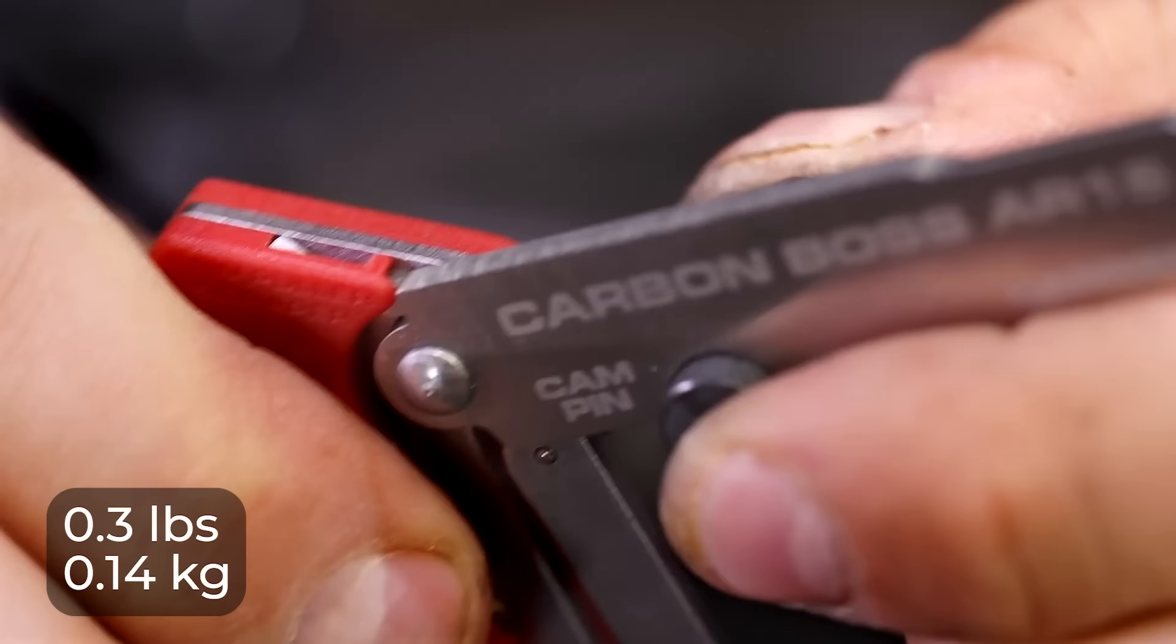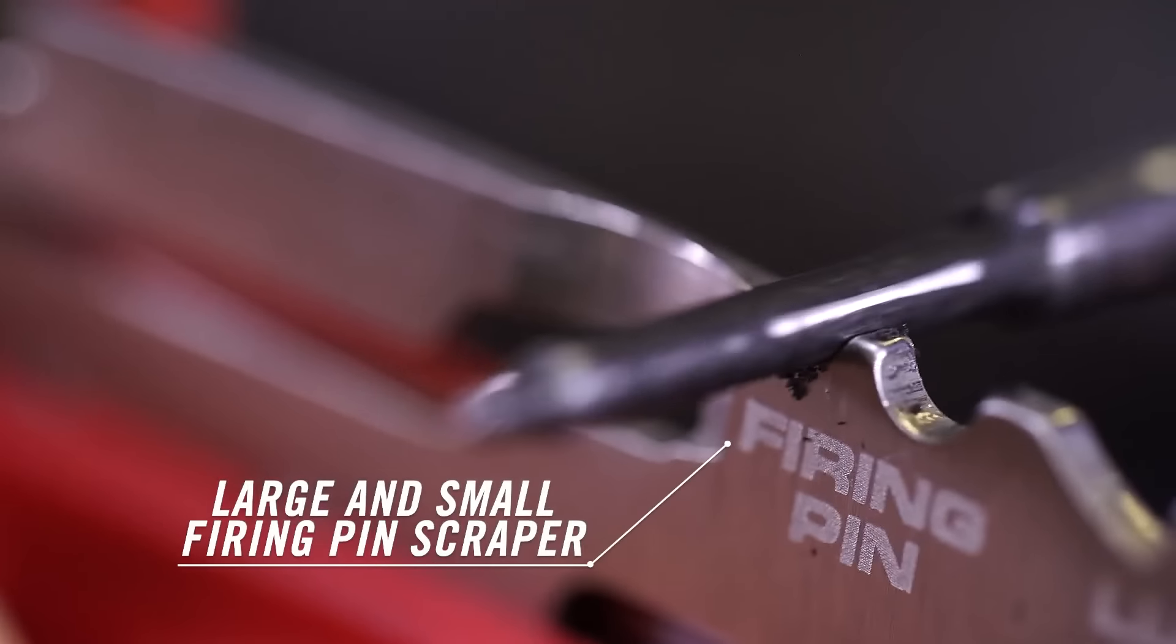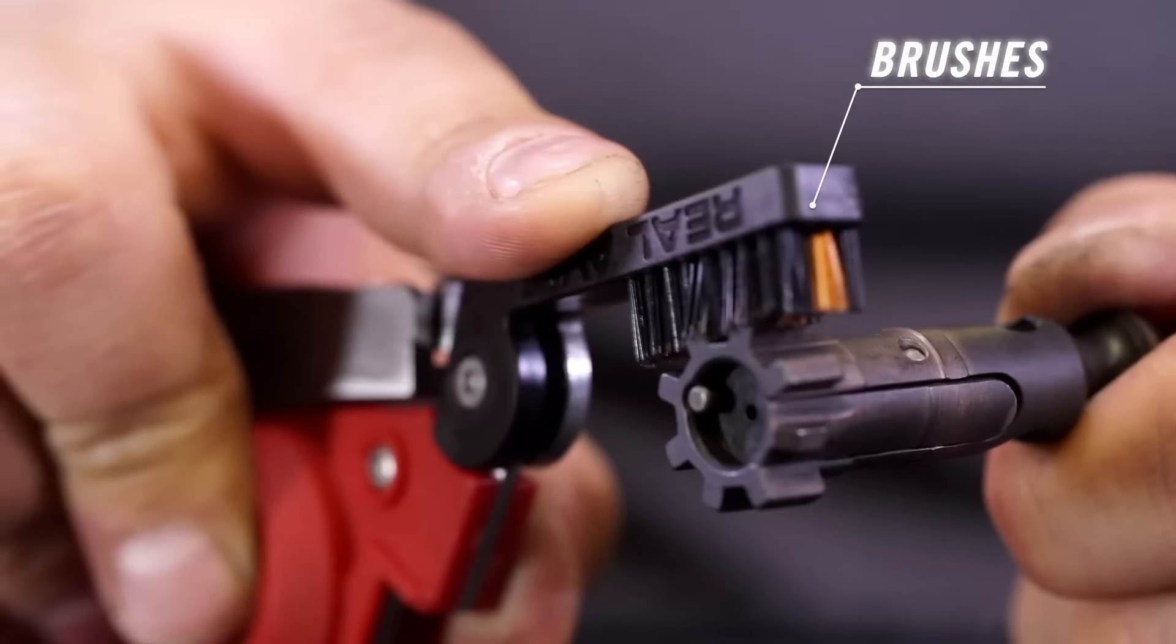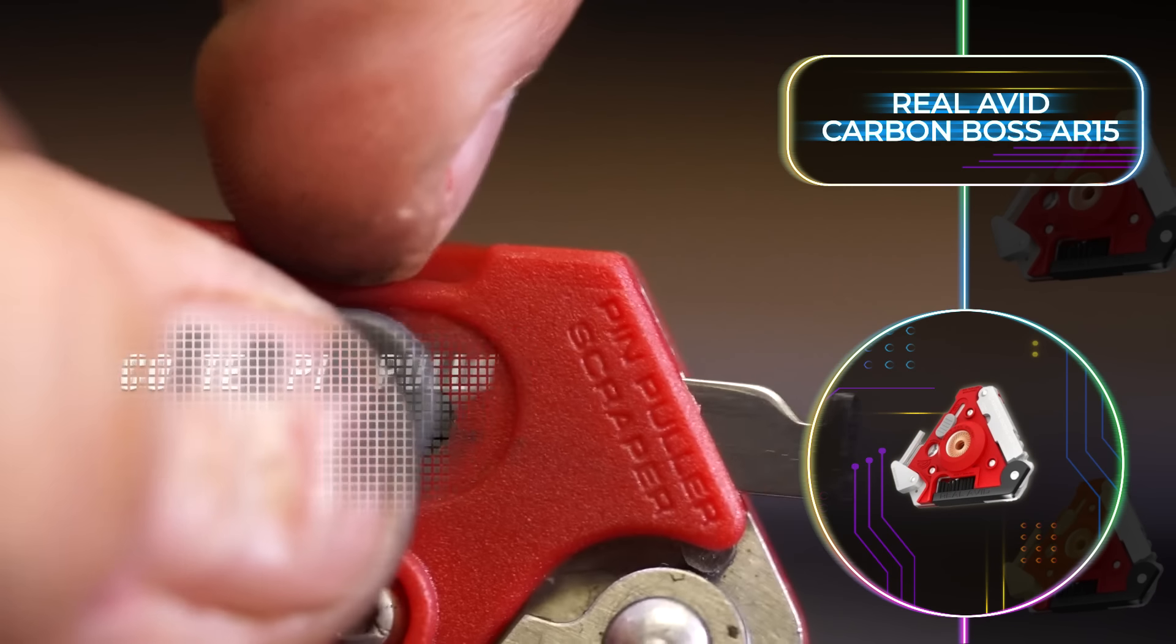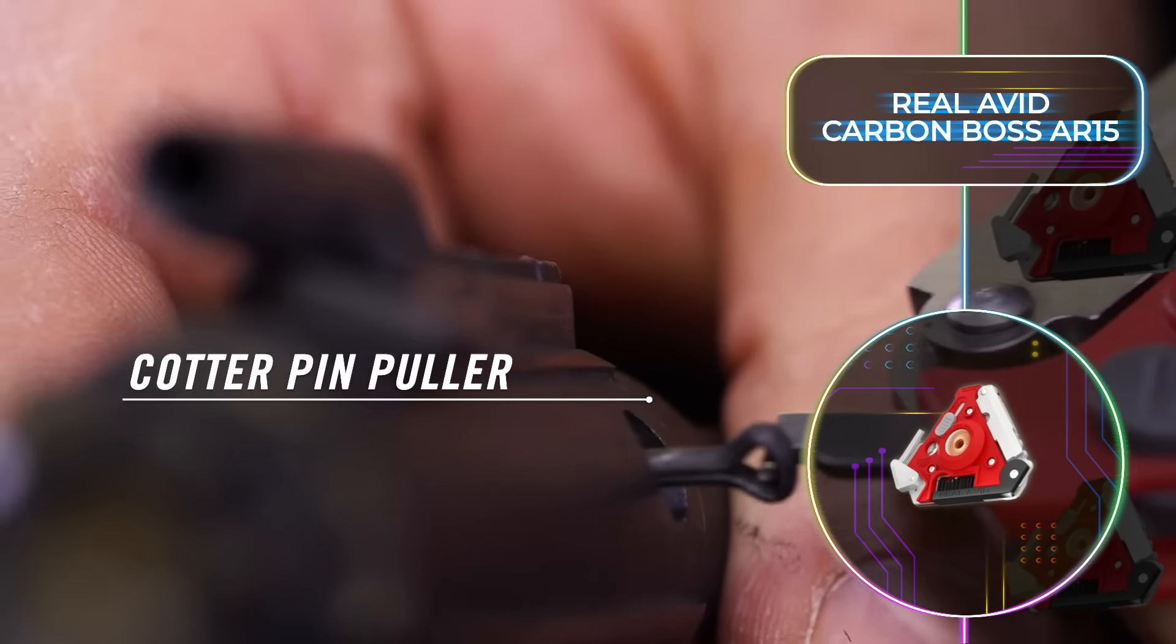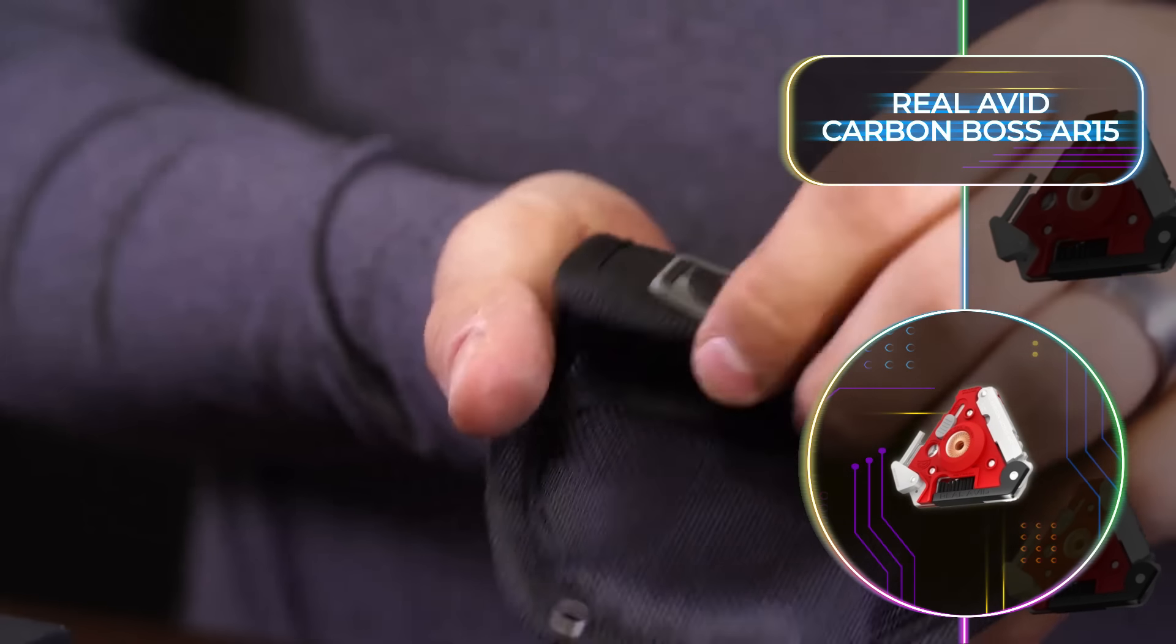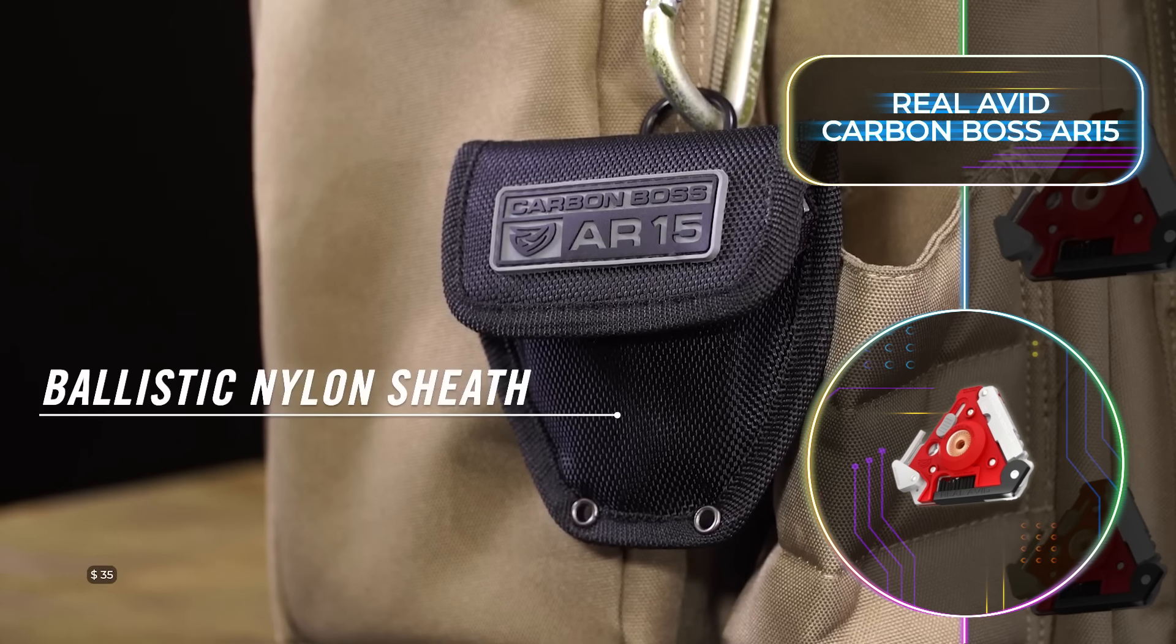Despite its comprehensive functionality, the Carbon Boss AR-15 weighs just 0.3 pounds or 0.14 kilograms. Some of the tools are small and large firing pin scrapers, an extractor scraper, various brushes, and a pin punch. Each tool is clearly labeled, making it perfect for both beginners and seasoned gun enthusiasts alike. There's also a convenient nylon pouch included for easy storage and transport, all for just $35.